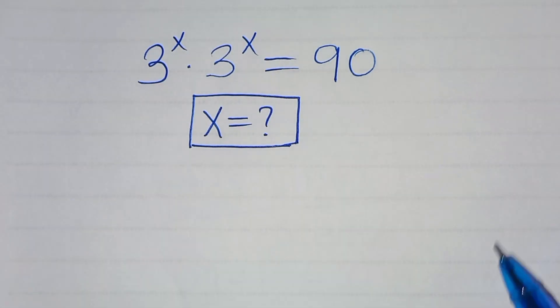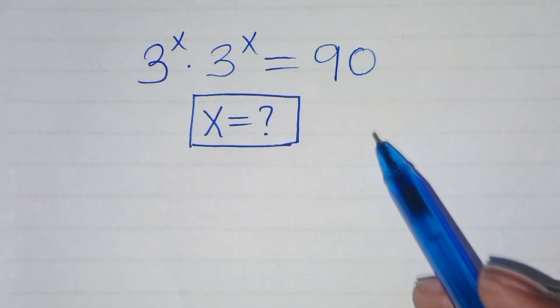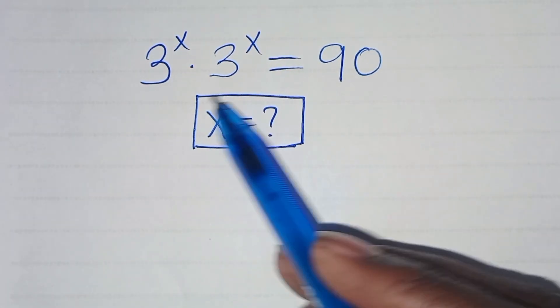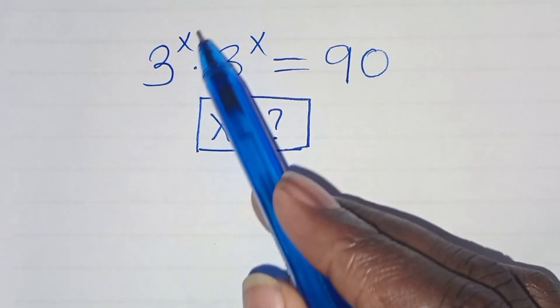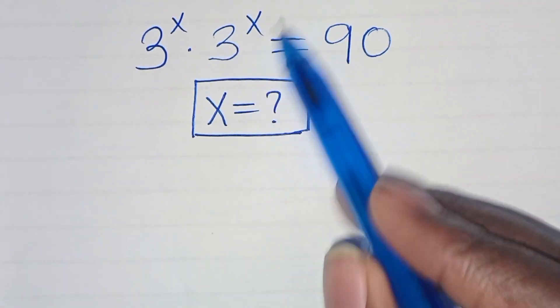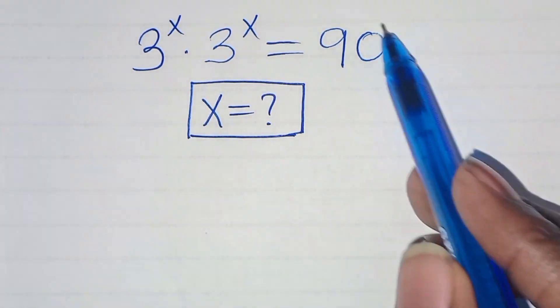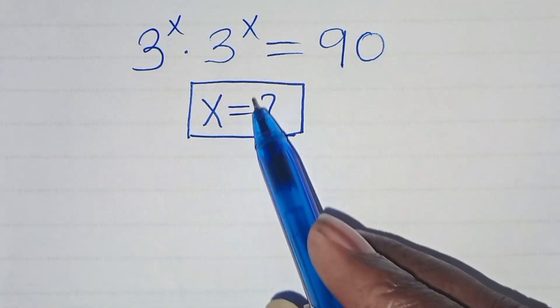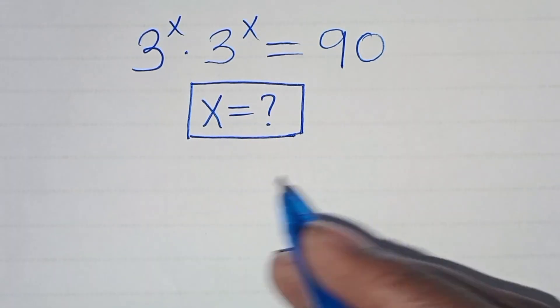Hello everyone, you are welcome to solve this nice exponential equation which is 3 to the power of x times 3 to the power of x. This is equal to 90. So what is the value of x?